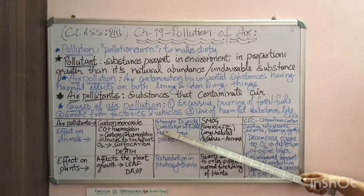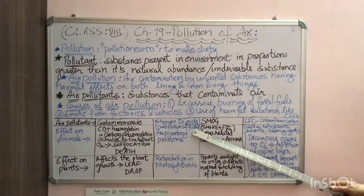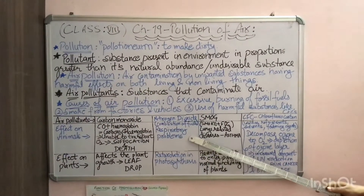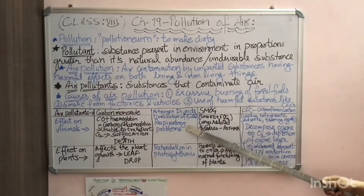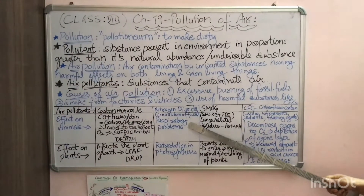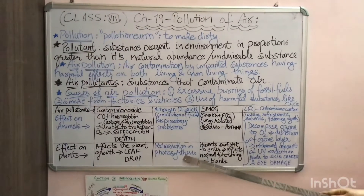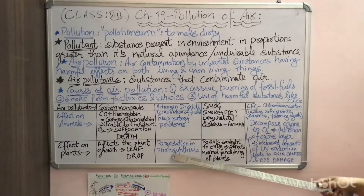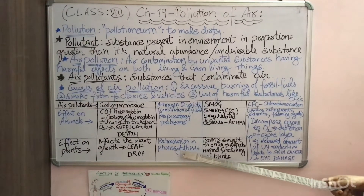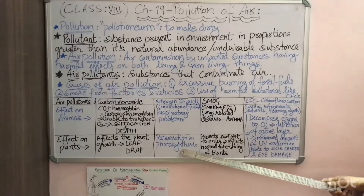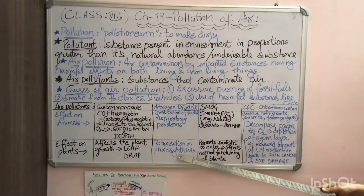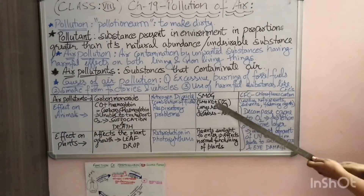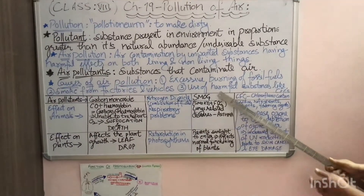Nitrogen dioxide is produced due to the combustion of fuels. In animals and human beings, it causes respiratory problems. In plants, it causes retardation of photosynthesis — photosynthesis being the process by which plants produce their food.